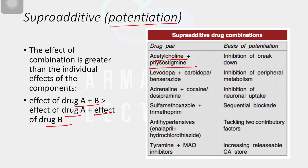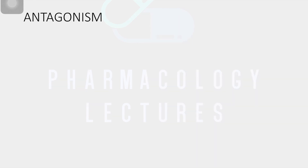Further examples of supra-additive actions: levodopa and carbidopa, used in CNS and Parkinsonism; sulfamethoxazole and trimethoprim, antibiotic medications; and antihypertensive drugs enalapril and hydrochlorothiazide. These examples may be difficult to remember now as we haven't gone through the individual chapters yet, but we will revisit them.